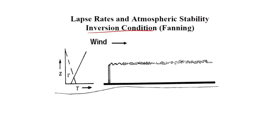Here we are going to look at the inversion condition. So this is the dry adiabatic lapse rate. If I am releasing my pollutant here and this is the temperature of the environment — inversion condition: as I move away from the earth surface the temperature is increasing. The packet of air given out here will only travel till the inversion point, and it is going to be trapped there. Even if it is pushed up, it is colder than the surrounding air, so it is going to come down. It is going to be concentrated at that layer.